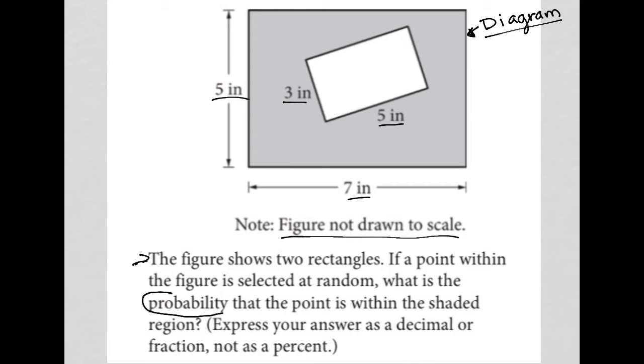So anytime I see the word probability on this test, it tells me that I want to have a fraction where the numerator is what I want and the denominator is what I have.